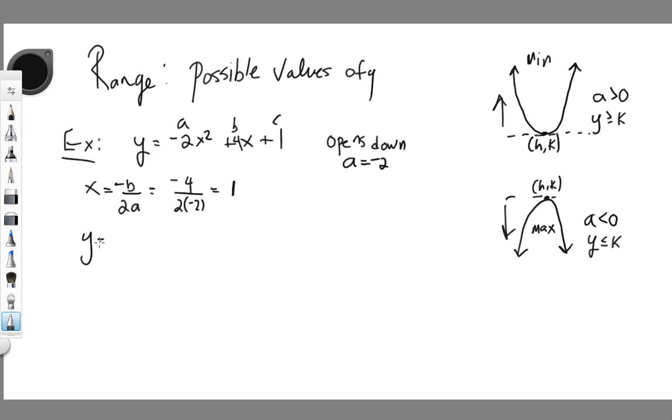Now we are interested in the y-coordinate, so what I have to do now is sub that x back in here. So negative 2 times 1 squared, plus 4 times 1, plus 1. And then that gives us, so 1 squared is 1 times negative 2, so that's negative 2, plus 4, plus 1. So that's negative 2 plus 5, so that's 3. So my y-coordinate is 3.